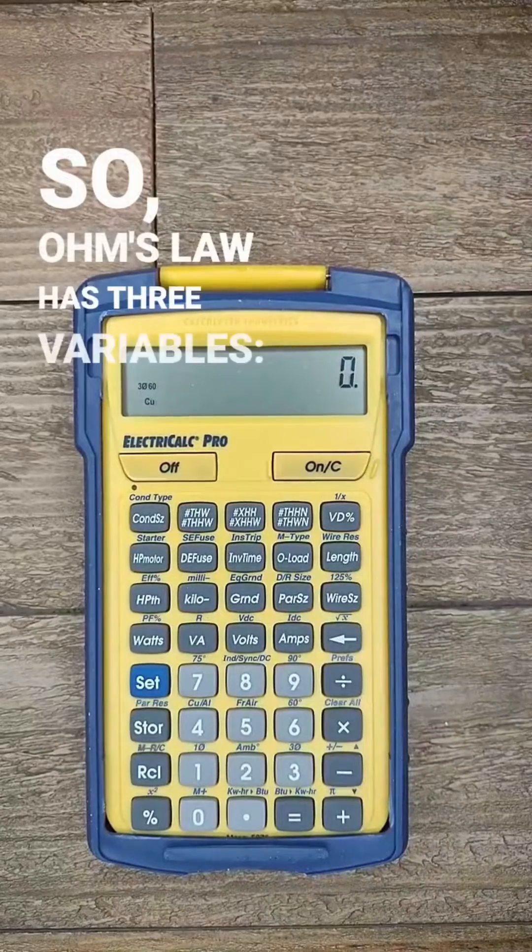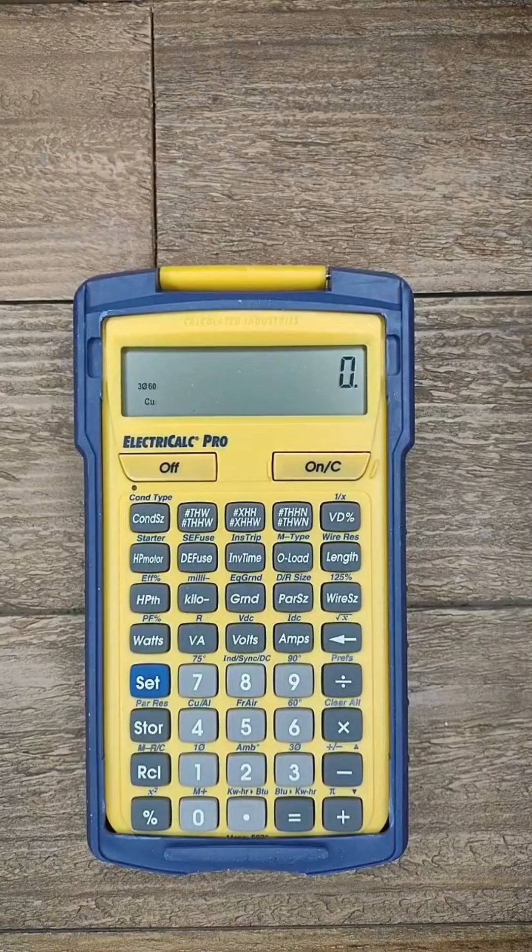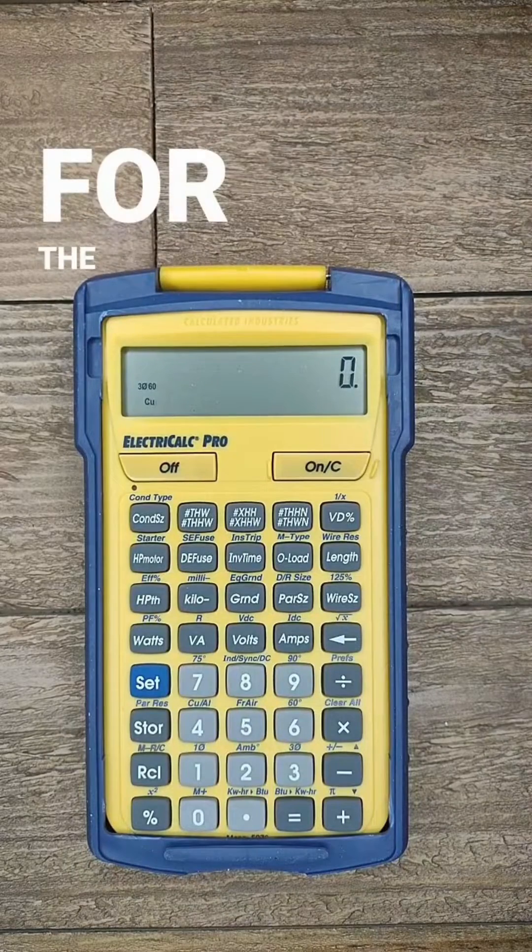So Ohm's Law has three variables: voltage, current, and resistance. We only need to tell the calculator two, and it'll solve for the third.